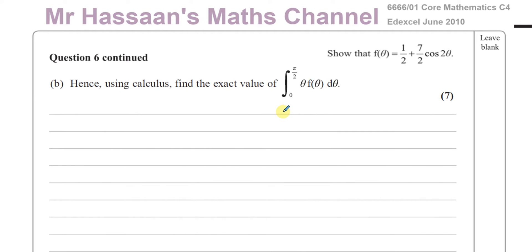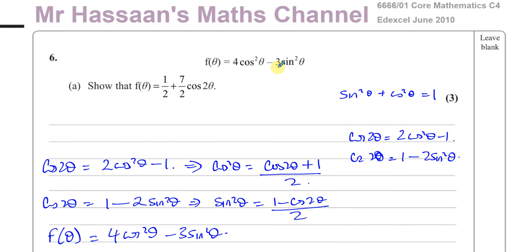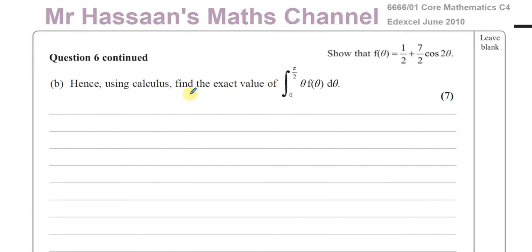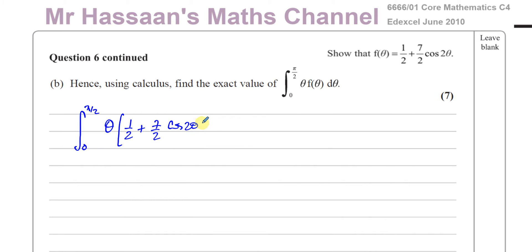In part A we had f(θ), which was a given expression, and we had to show that f(θ) equals one half plus seven over two cosine 2θ. Now we are asked to find the exact value of the integral between 0 and π/2 of θ times f(θ). We already know what f(θ) is from part A, so we need to integrate θ times (one half plus seven over two cosine 2θ) with respect to θ.